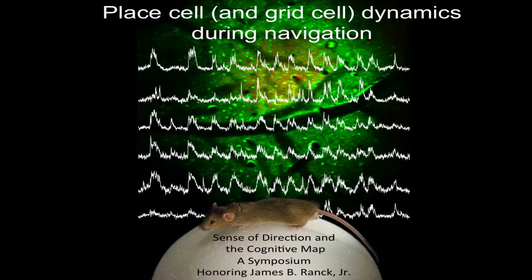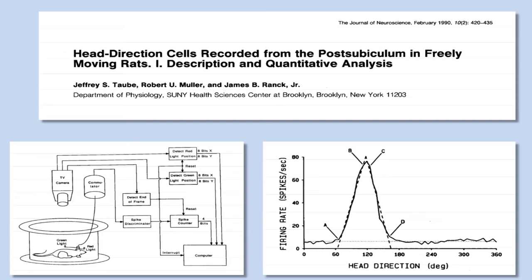I come from a background primarily in developing new technology for large-scale recording and imaging — optical imaging, fMRI, things like that. I was at Bell Laboratories for a number of years, then went to Princeton around 2000 and started thinking about doing some work in the head direction cell system. Both my colleagues and I were enormously influenced by the fundamental work described first in 1984 and then in 1990 on head direction cells.